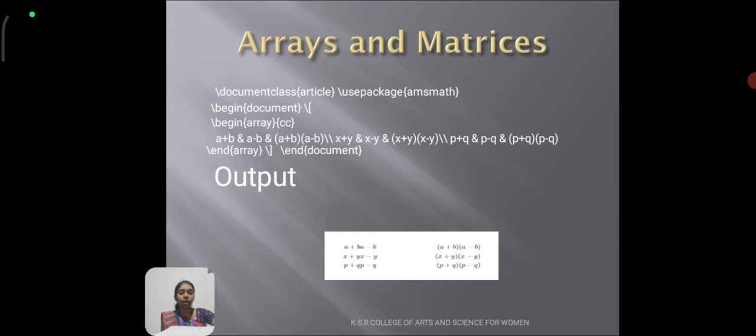Next topic is arrays and matrices. To format arrays and matrices, we use the array environment which must occur within one of the mathematical environments. The choice of cc specifies the justification. Each row and column must be separated by the \\ symbol.